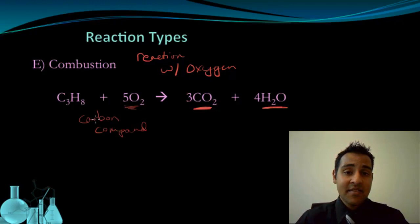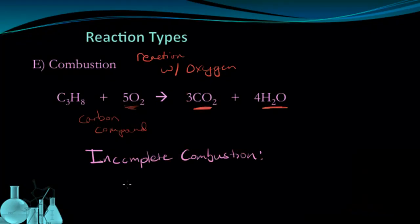Now this reaction assumes that there is enough oxygen present to completely burn this carbon compound. Sometimes that's not the case. If you don't have enough oxygen present, we get an incomplete combustion. In an incomplete combustion, we still have the propane and it combines with oxygen, but there's not enough oxygen. So what we get as products is slightly different. In addition to seeing carbon dioxide and water, we also see carbon monoxide and solid carbon as additional products in an incomplete combustion.